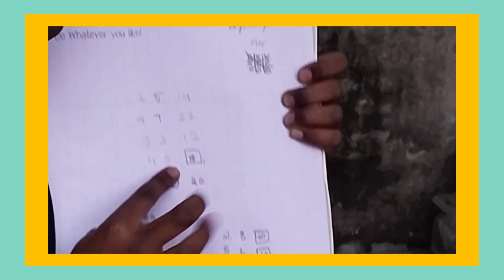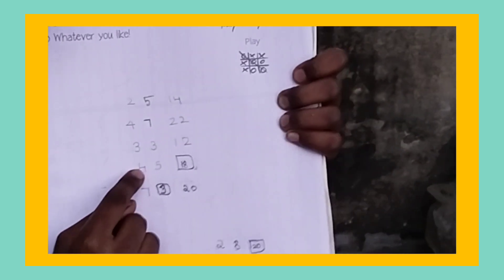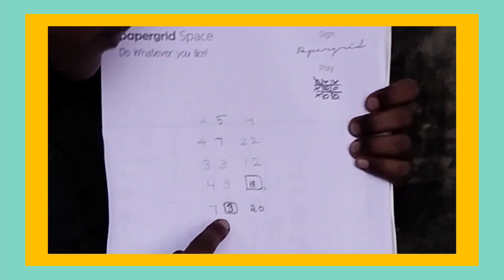Mixed sum. 4 plus 5, 9. 2 nines are 18. 4 plus 5, 9. 9 twos are 18. Next.